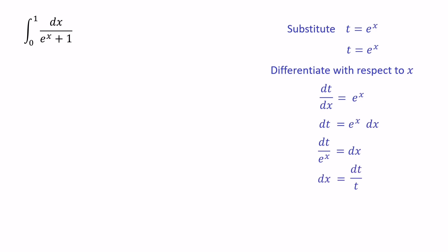Now we need to change the upper limit and lower limit corresponding to the t variable. Remember, when x equals 0, the lower limit t equals e to the power of 0, then t equals 1. When x equals 1, the upper limit t equals e to the power of 1, then t equals e.